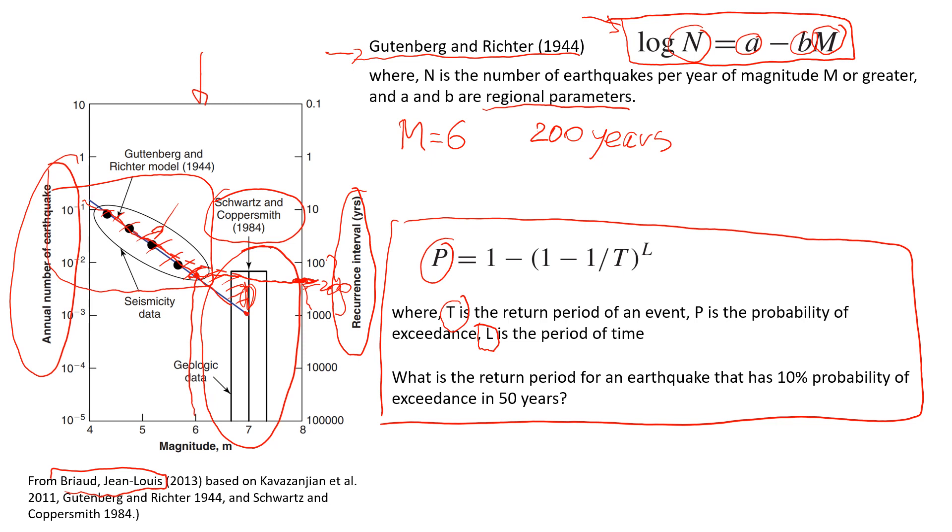So now let's see how we can use this formula to estimate the return period of an earthquake that has 10% probability of exceedance in 50 years. So it's 1 in 10 chance that there would be an earthquake that would exceed this magnitude in the next 50 years. So what we're going to do, we will rearrange this formula for T, because that's what we need to get. So if we arrange the formula, we're going to have T equals 1 divided by 1 minus (1 minus P) to the power of (1 divided by L).